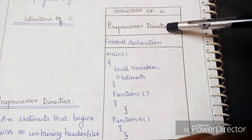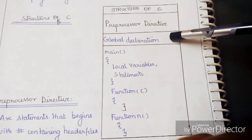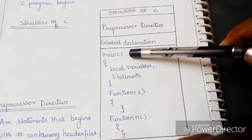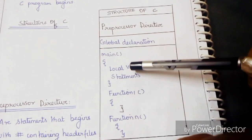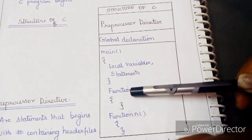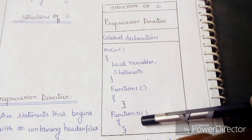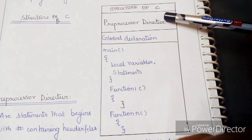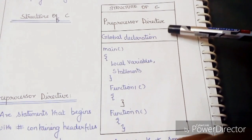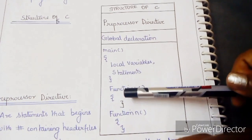The structure of a C program has the following parts. The first part is the preprocessor directive. The second part is the global declaration — this is an optional section. Then comes the main function, which contains local variables and statements. Finally, there are user-defined functions, from function one to function N.